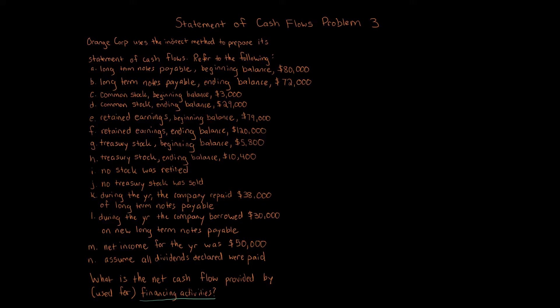When working through financing activities, I focus on specific activities in a certain order. I like to look at it like the balance sheet: assets equals liabilities plus owner's equity. Nothing here really involves assets — it's mostly liabilities and owner's equity. So the idea is to look at which transactions involve liabilities.